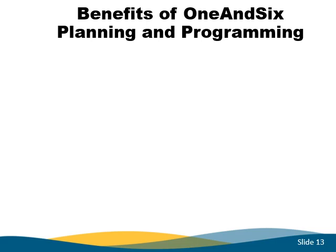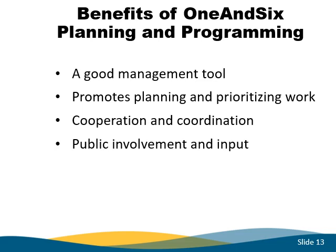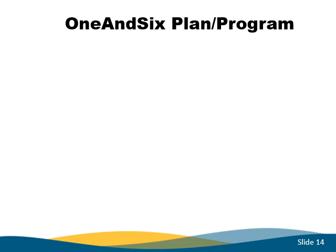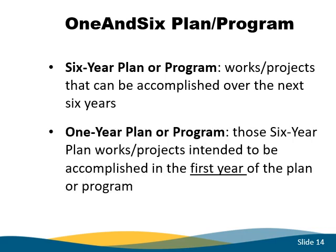The benefits of one-in-six planning are: it serves as a good management tool; allows the state, county, and municipalities to work as equal partners in the orderly development, operation, and management of an integrated system of public roads; provides a structure for cooperation and coordination among government entities for works and projects, timetables, and funding; allows public input at a hearing at least annually; maximizes use of public funds; and informs the public where and how funds are being applied. The name one-in-six denotes planning a program of works and projects for a six-year period, and requires designation of those works and projects intended to be accomplished in the first year of the plan.